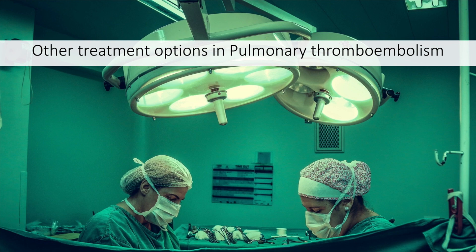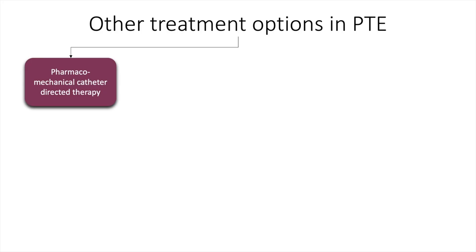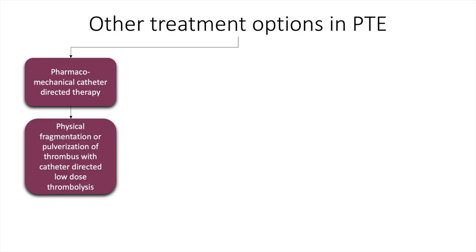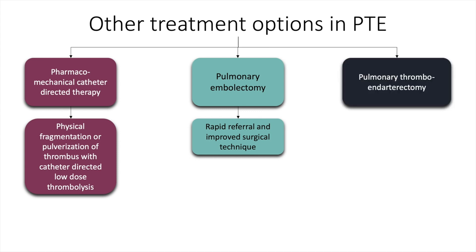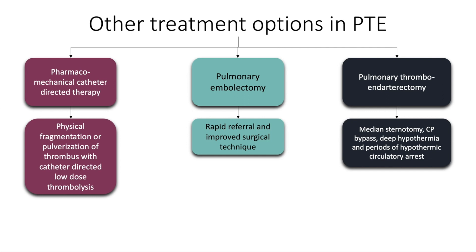Other treatment options in pulmonary thromboembolism include pharmacomechanical catheter-directed therapy, wherein physical fragmentation or pulverization of thrombus with catheter-directed low-dose thrombolysis is undertaken. Another option is pulmonary embolectomy, which requires rapid referral and improved surgical technique. Three to five percent of patients with PTE will develop pulmonary arterial hypertension, for whom pulmonary thromboendarterectomy is an option, requiring median sternotomy, cardiopulmonary bypass, deep hypothermia, and periods of hypothermic circulatory arrest.